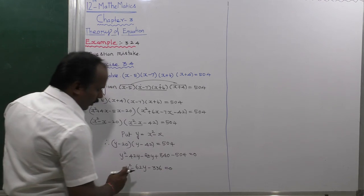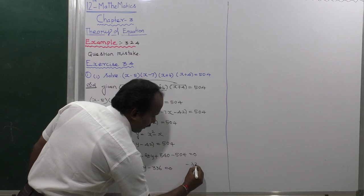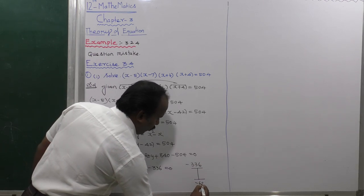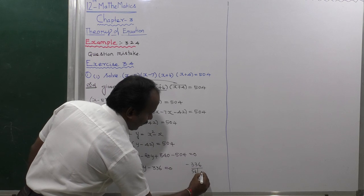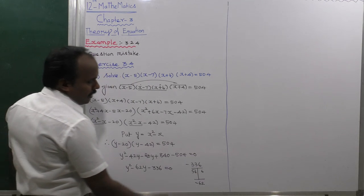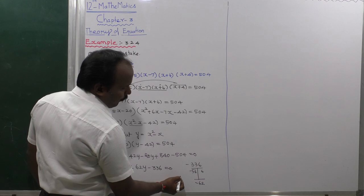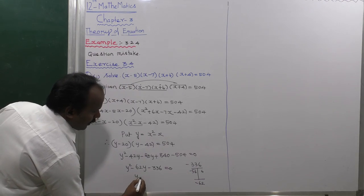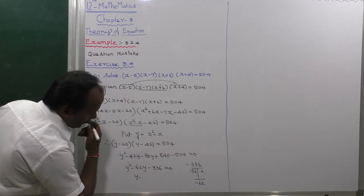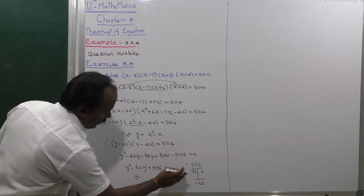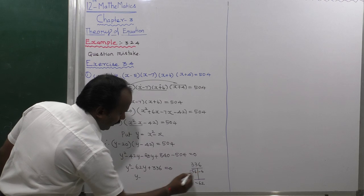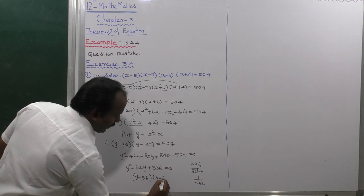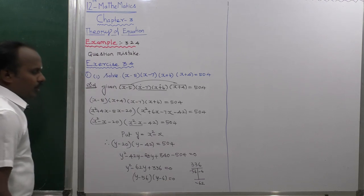Factorizing: we need two numbers whose product is minus 336 and sum is minus 62 — those are minus 56 and minus 6. So the factored form is (y minus 56)(y minus 6) equals 0.